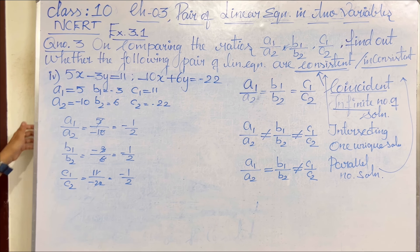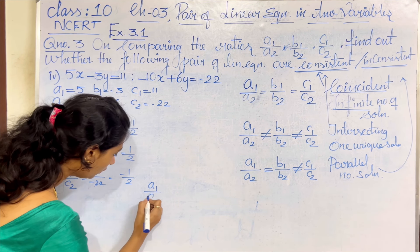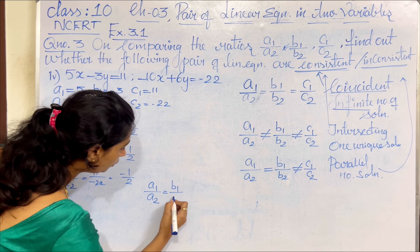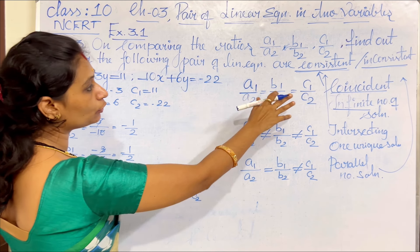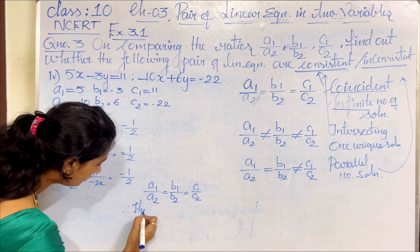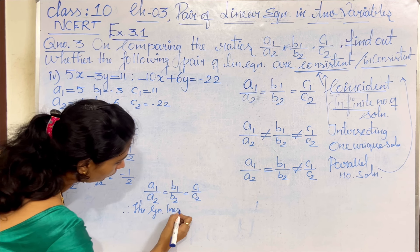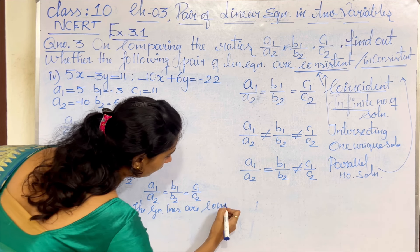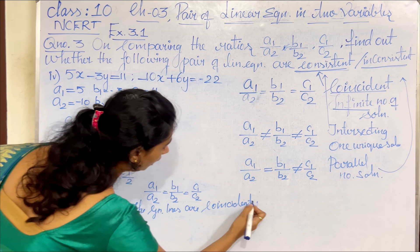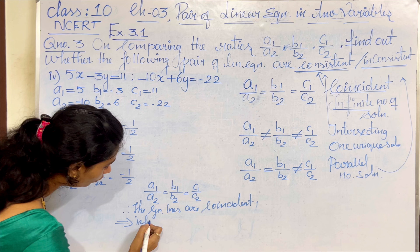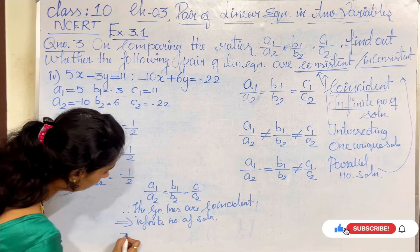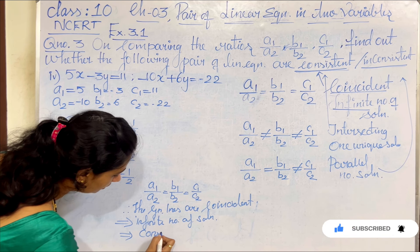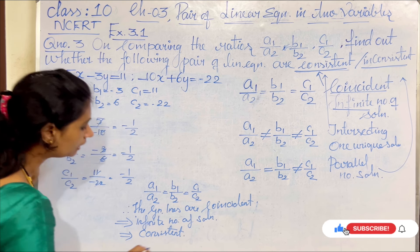So, here we observe that A1 by A2 equal to B1 by B2 is also equal to C1 by C2. If all three ratios are equal, which is nothing but coincident. Therefore, the given lines are coincident lines. They have infinite number of solutions. If they have infinite number of solutions, it is nothing but consistent. The given pair of linear equations forms a consistent system.